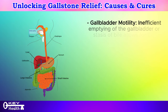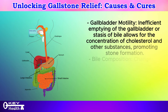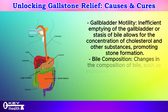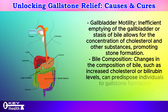Gallbladder motility: Inefficient emptying of the gallbladder or stasis of bile allows for the concentration of cholesterol and other substances, promoting stone formation. Changes in the composition of bile, such as increased cholesterol or bilirubin levels, can also predispose individuals to gallstone formation.